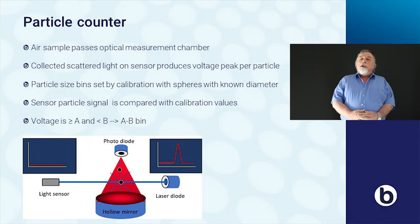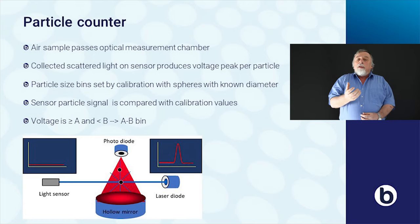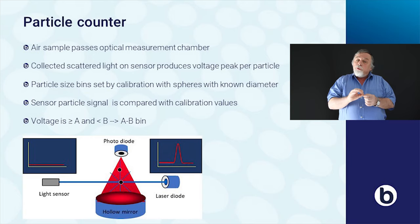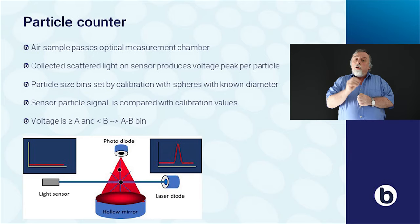A particle counter measures the particles in air. It takes an air sample into the measurement system, and there a particle will pass a laser beam and scatter light. This light will be collected through a hollow mirror onto a sensor, so a particle will produce a voltage peak. This voltage peak can be compared with the voltage peak given by a known particle, a particle which you use to calibrate this instrument.